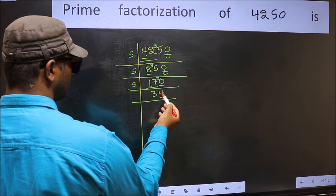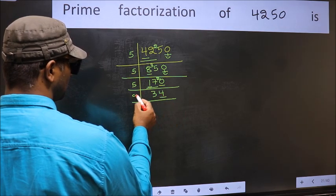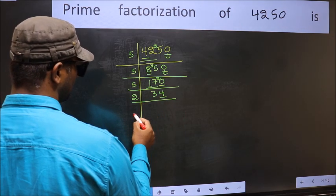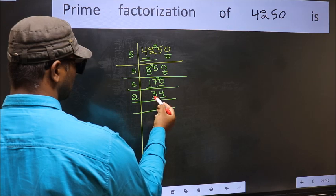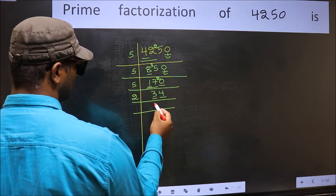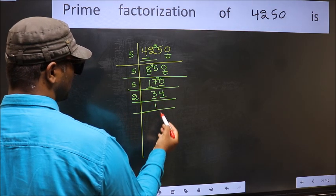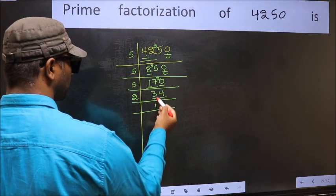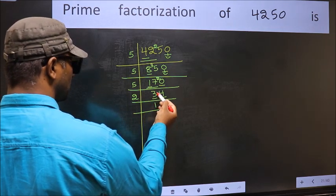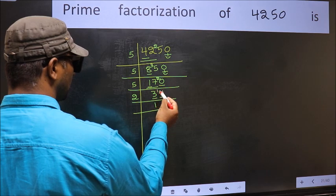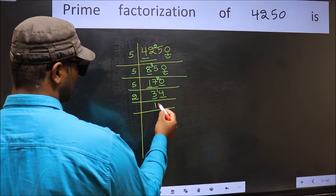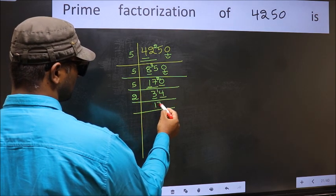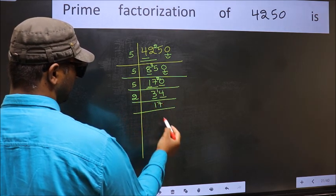Now the last digit is 4, so take 2. First number is 3. A number close to 3 in the 2-times table is 2×1=2. 3 minus 2 is 1, carried forward: 14. When do we get 14 in the 2-times table? 2×7 is 14.